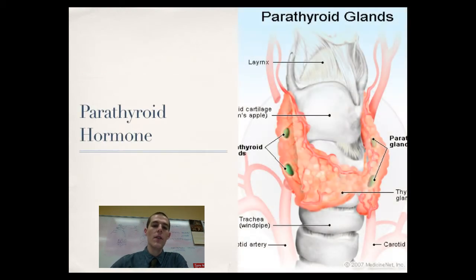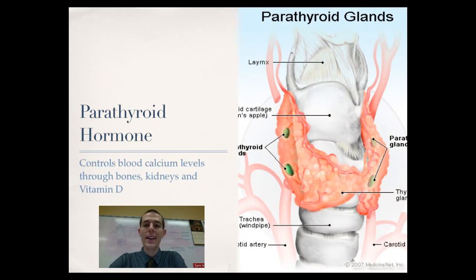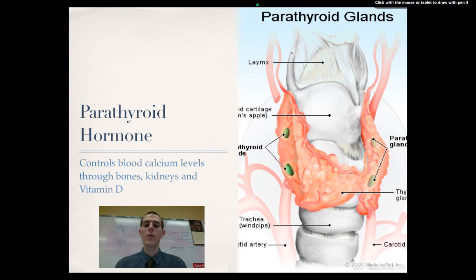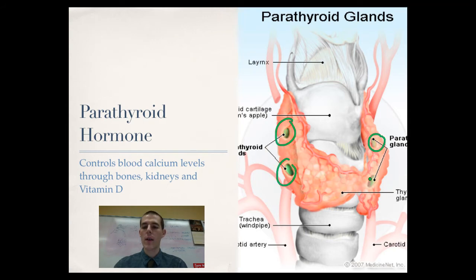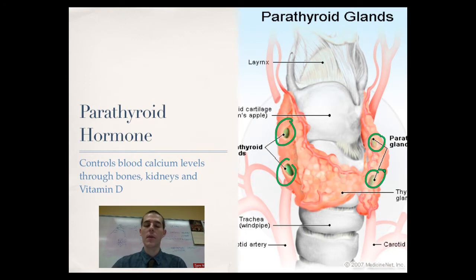First up is the parathyroid glands, which release parathyroid hormone. The name gives it away — it's probably on the thyroid gland, which wraps around the trachea. There are four parathyroid glands located right there on either side. One of the big things they do is release parathyroid hormone, which is in charge of blood calcium levels. Blood calcium levels are really important for cellular function, especially muscle contraction and nerve signaling.